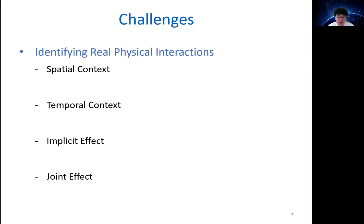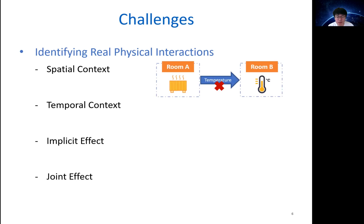Therefore, it's crucial to identify real physical interactions to correctly enforce safety and security policies in the smart home environment. To identify real physical interactions, we need to address four challenges. First is identifying the spatial context of devices, which refers to location information. For example, if a sensor and heater are not in the same room, the sensor is unlikely to detect the temperature change caused by the heater. Second, some physical interactions may happen immediately while others happen slowly — turning on a light changes illuminance immediately, but turning on a thermostat cannot change temperature as quickly.